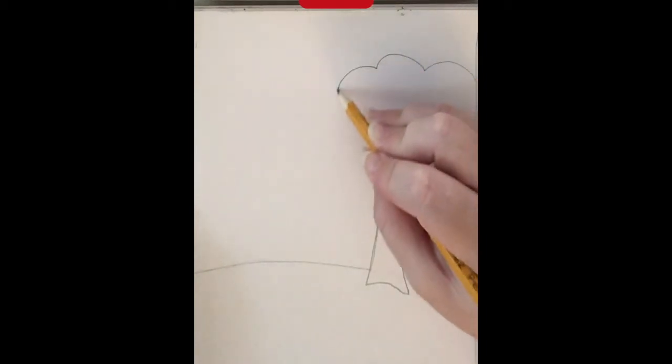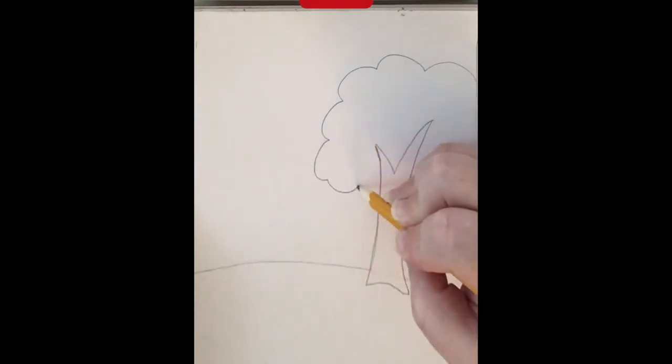Because this tree is in front of that hill. But then we're going to make a big bushy area where all the leaves are going to go. There we go.